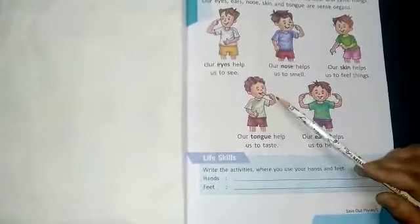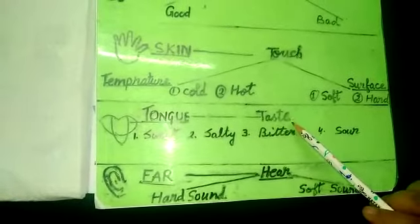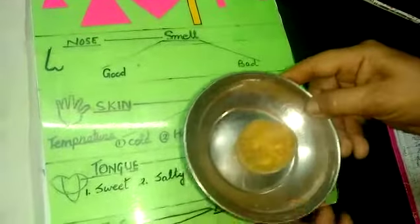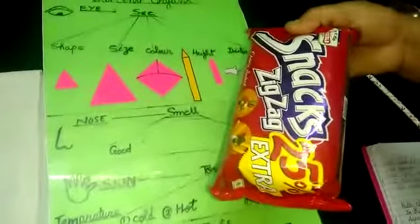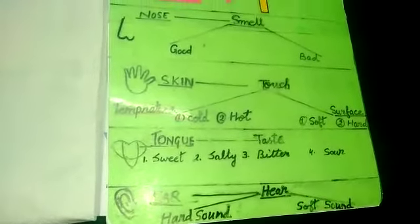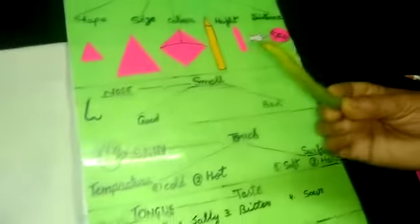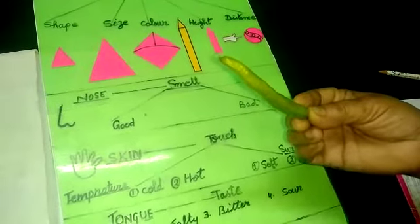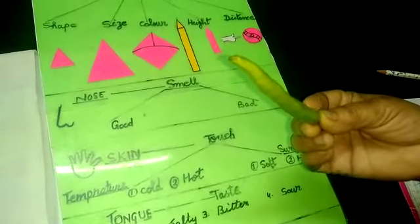Our tongue helps us to taste. Tongue हमें taste बताती है. Tongue helps us to tell the different types of taste. Sweet — children, you are looking that there is a Ladoo, and the taste of this Ladoo is sweet. Then salty — this biscuit packet has the salty taste, namkeen. Bitter — children, when you eat green chili, what do you feel? This is the bitter taste, tika या कड़वा.